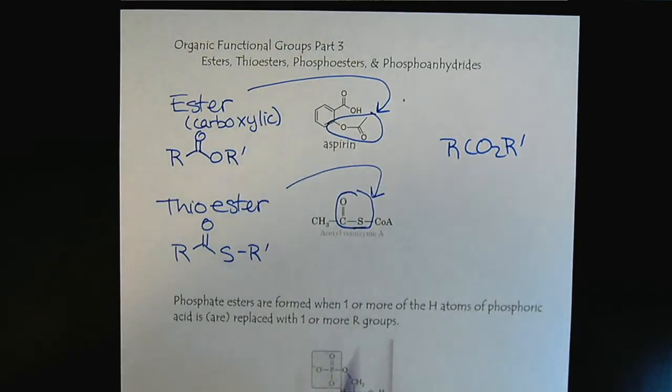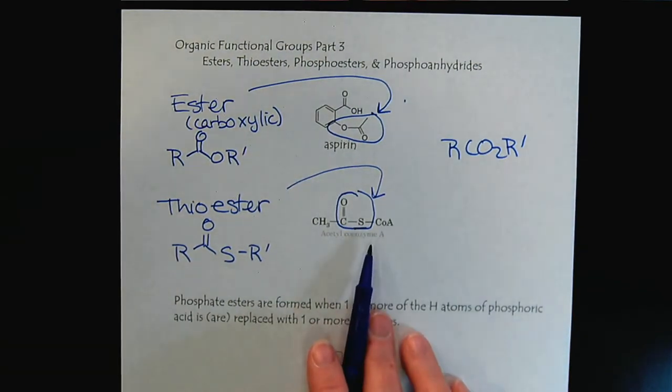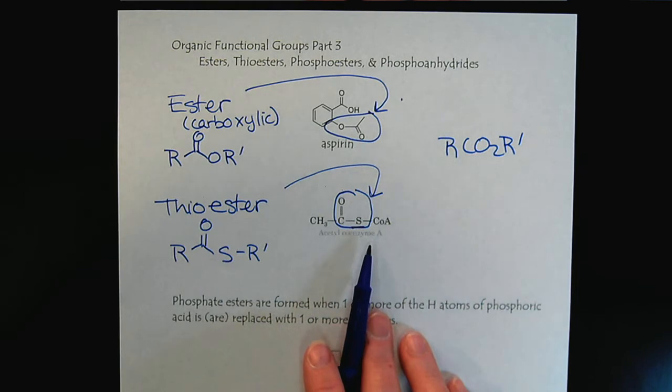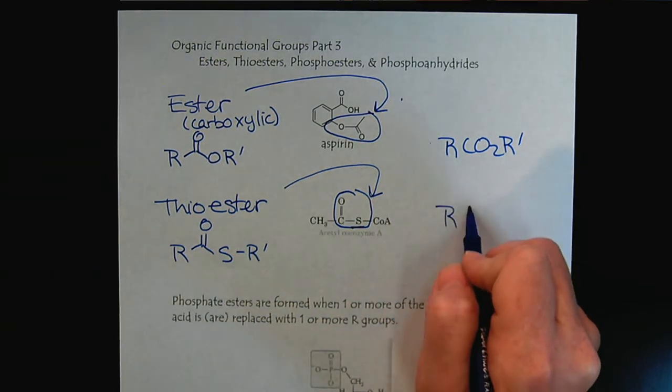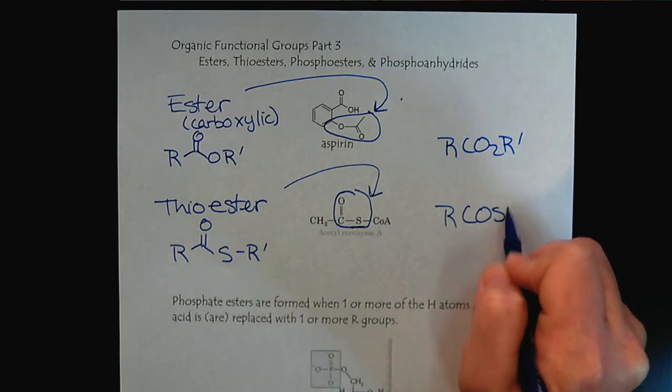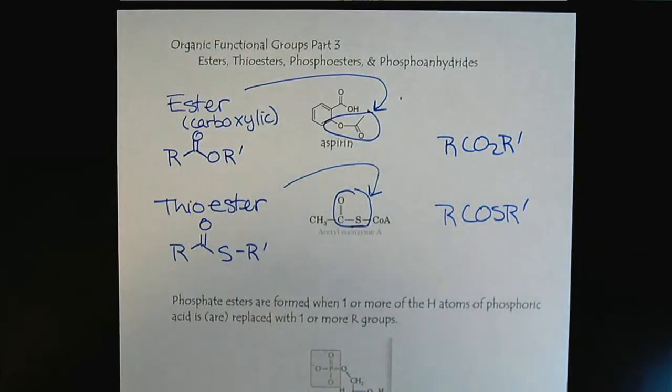And acetyl coenzyme A is very important in energy production. And we'll see that a lot more later in the semester. And so the condensed form here would be written like this.